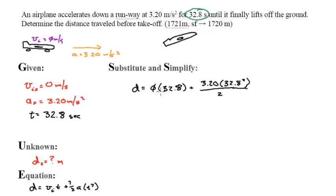Because this is multiplied by 0, this blows up, and I get a distance of 3.20 times 32.8 squared over 2.